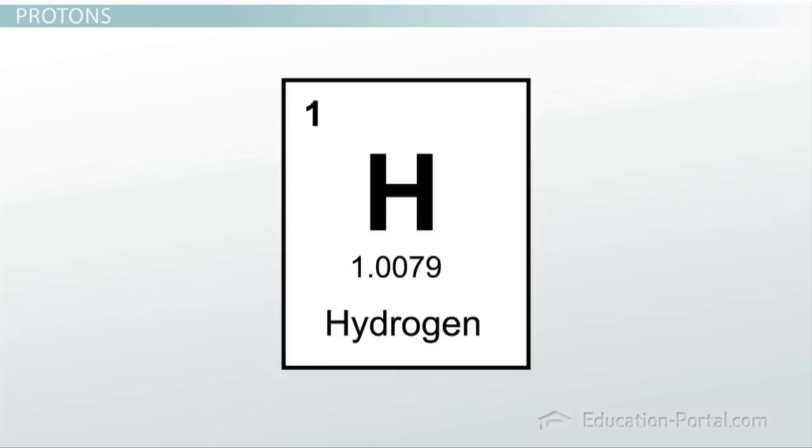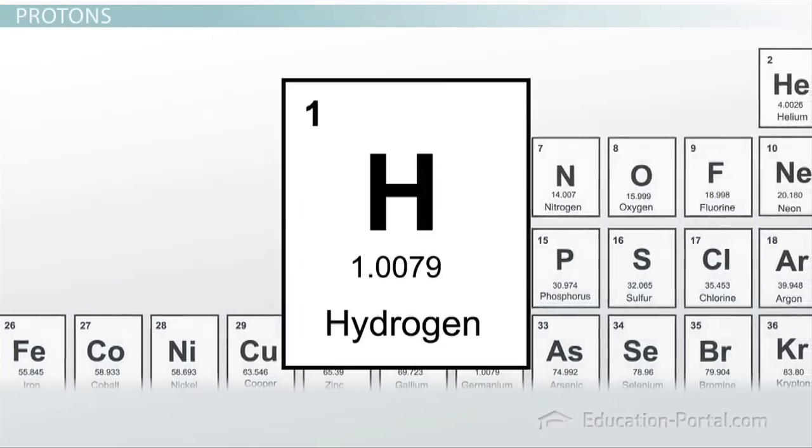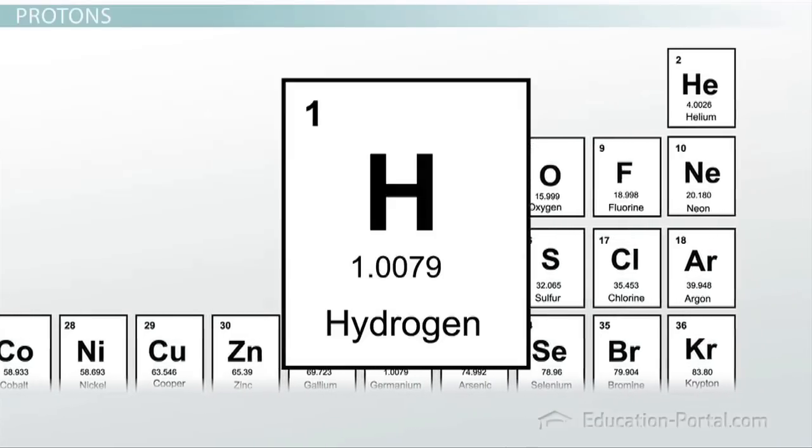You should also notice that the number 1 is prominently displayed in this box. This indicates the number of protons that atom will have. You may notice quickly that this number is increasing by 1 as you move from left to right and top to bottom on the periodic table.